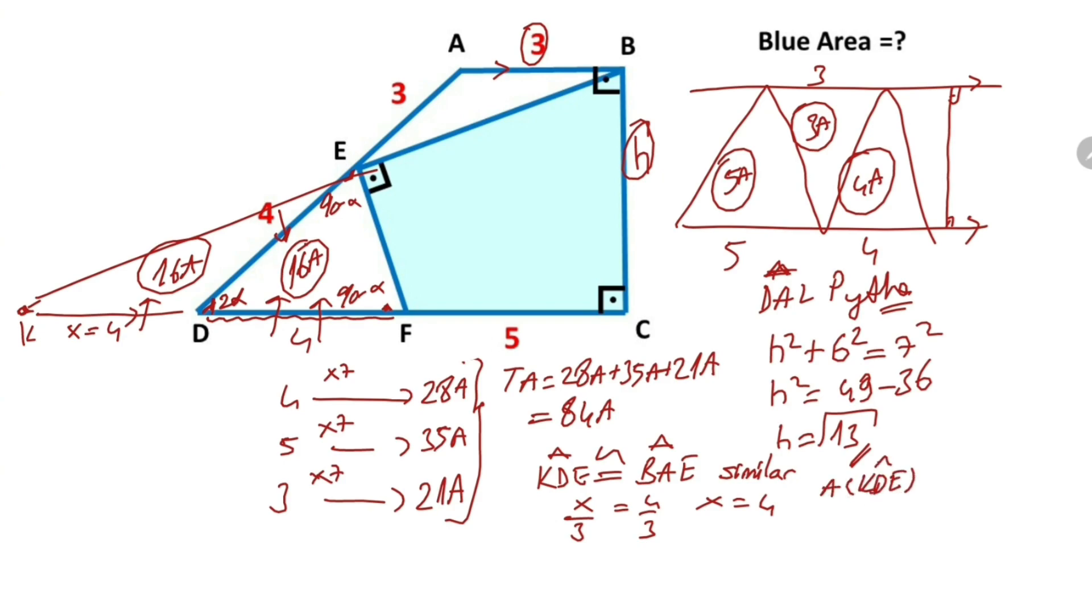The area of triangle KDE over the area of triangle BAE equals 4 over 3 whole squared. So if the area of triangle KDE is 16a, the area of triangle BAE must be equal to 9a.